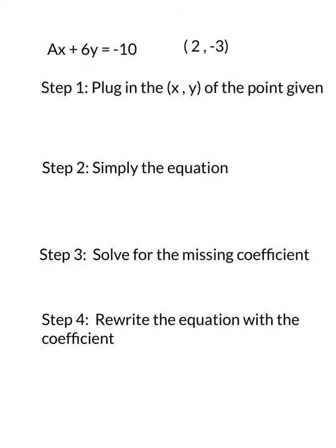So here's our last example with the steps written out. So I'll do each part under the steps. So I have this equation, Ax plus 6y equals negative 10, and then this point that's on that line. So let me begin by doing the first step.